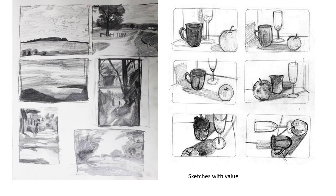Another type of sketch you'll be doing is sketches with value. In this case there are three values: the darkest, a medium value, and then white of the paper. This is a way to generalize and look for the large areas of value within your sketches.